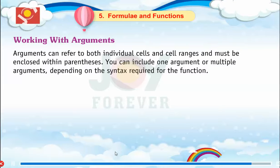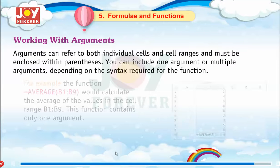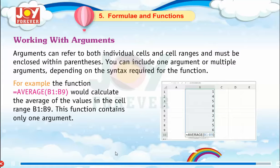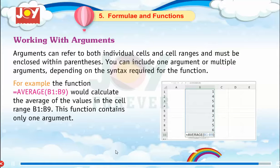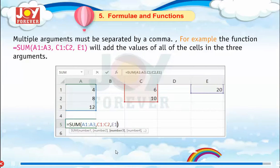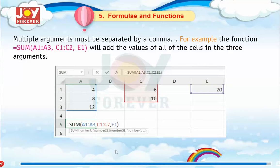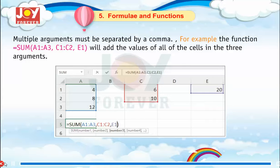Working with Arguments. Arguments can refer to both individual cells and cell ranges, and must be enclosed within parentheses. You can include one argument or multiple arguments depending on the syntax required for the function. For example, the function =AVERAGE(B1:B9) would calculate the average of the values in the cell range B1 to B9 — this function contains only one argument. Multiple arguments must be separated by a comma. For example, =SUM(A1, A3, C1:C2, E1) will add the values of all the cells in the three arguments.